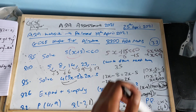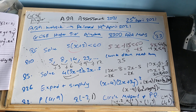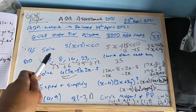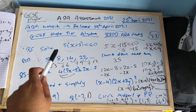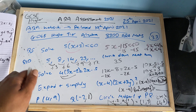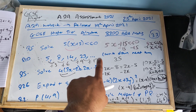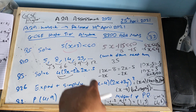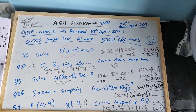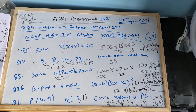Question ten: 5, 8, 14, 23. It says write down the next term. Well, 5 add 3 is 8. 8 add 6 is 14. 14 add 9 is 23. So you can see we're adding 3, adding 6, adding 9 — we're adding 3 more each time. So we're going to add 12 now. Twenty-three plus twelve is thirty-five.